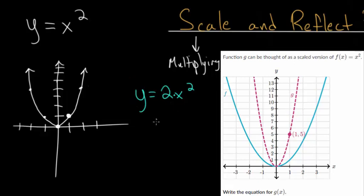One quick way to think about it is that you're essentially taking all the y values and doubling them. To really understand this, you want to make a table or just plot points. When we plug in 0, zero squared is 0 and 2 times 0 is 0, so it still goes through the origin. When we plug in 1, 1 squared is 1 times 2, which gives us 2 — that's double the y value compared to our parent function. When we plug in 2, 2 squared is 4 and 4 times 2 is 8, so instead of being at (2, 4), it's now going to be at (2, 8).